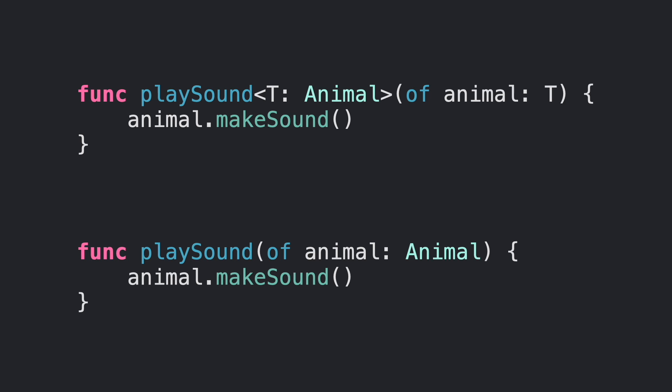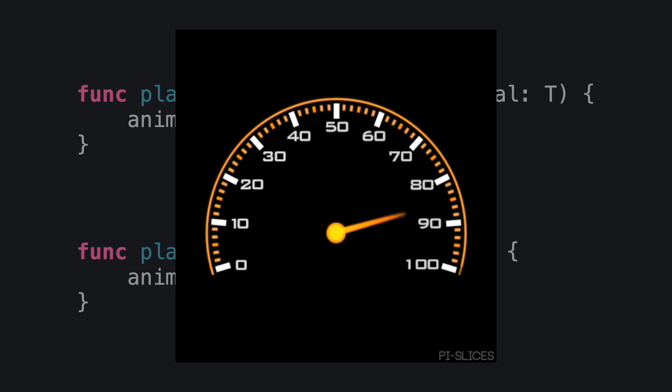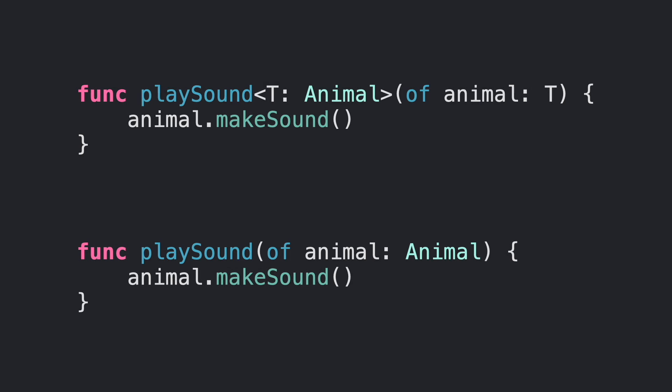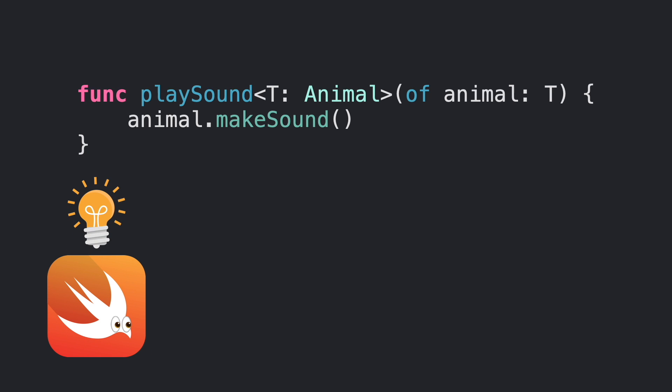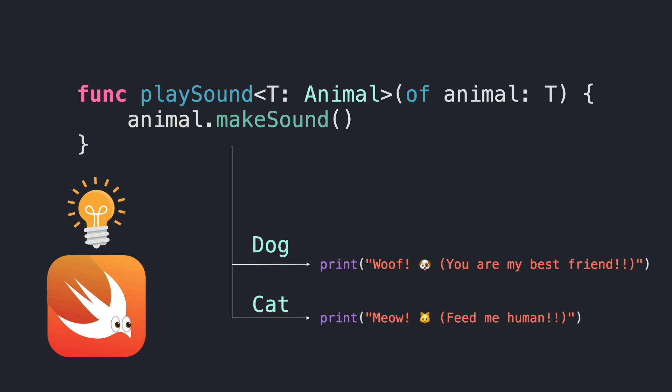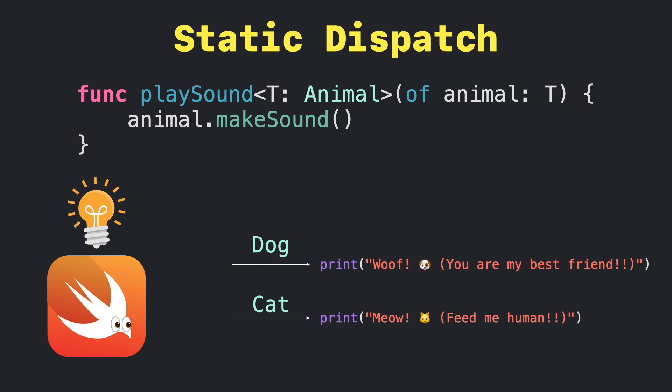It turns out that using existential types in Swift has a serious impact on your performance. When you declare a generic function, at compilation time Swift will resolve all the variations of what kind of animal can be invoked and what the different versions of the make sound method will be, depending on the concrete types conforming to Animal. Once compilation is done, Swift is already prepared with methods inlined to execute depending on the animal type. This technique is also known as static dispatch.